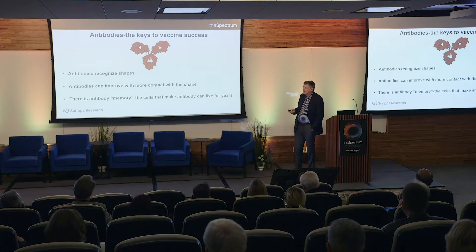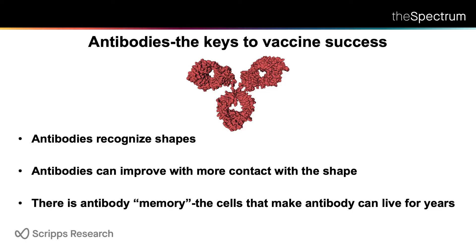How do vaccines work? They work primarily — not exclusively, but primarily — through circulating proteins in the blood that you probably know well: antibodies. They have key features: they recognize molecular shapes, and they can improve that recognition through a Darwinian process of mutation and selection given time. And there's antibody memory — cells that make antibody can live for many years, and you can detect protective antibodies to yellow fever 60 years after exposure.